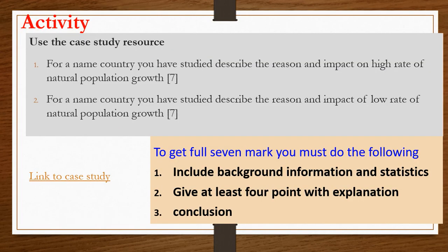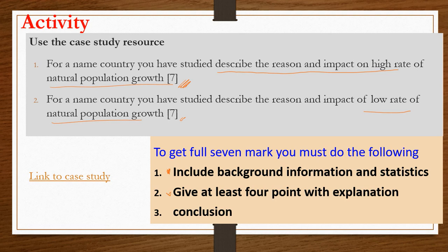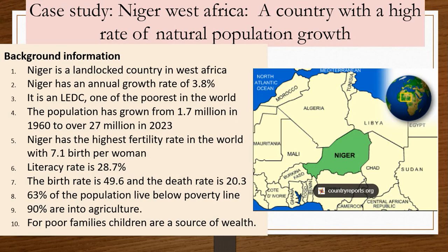For case study questions in IGCSE, the typical format is: 'For a named country you have studied, describe the reasons and impact of a high rate of natural population growth,' worth seven marks. To score full marks, include background information with statistics, place-specific references, at least four well-explained points, and a reasonable conclusion.